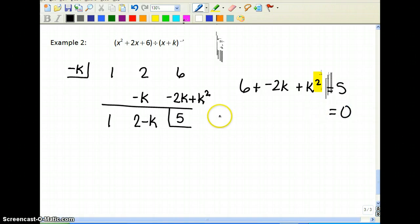So I'm going to reorganize and subtract 5. So I'm going to have k squared minus 2k. 6 minus 5 would be plus 1. That will factor to k minus 1 times k minus 1 equals 0. So k must be 1.